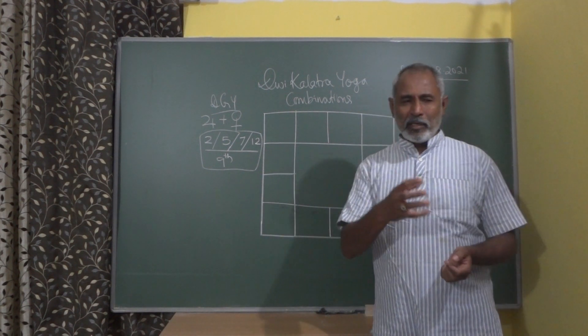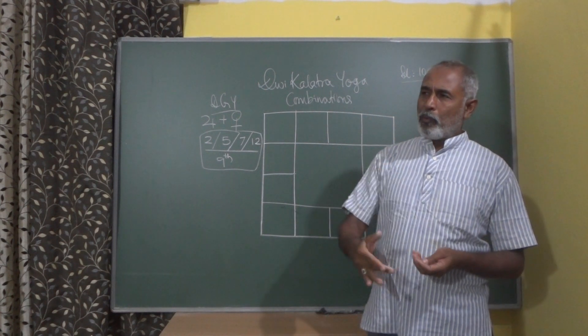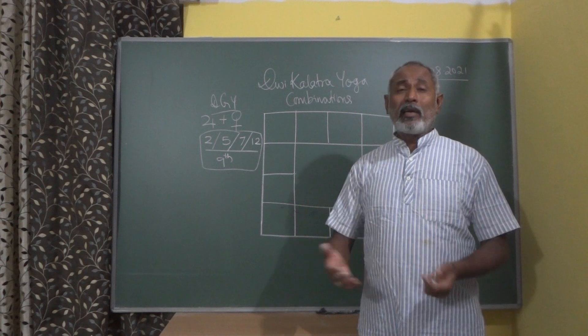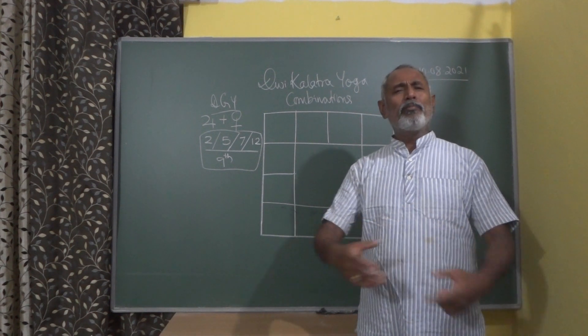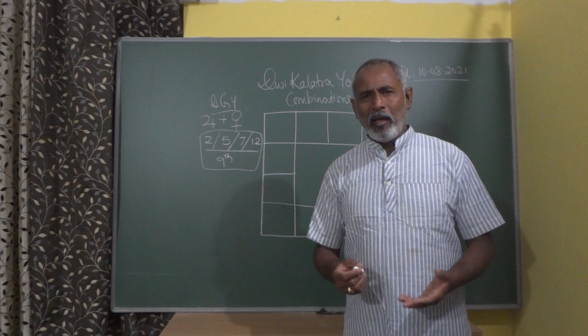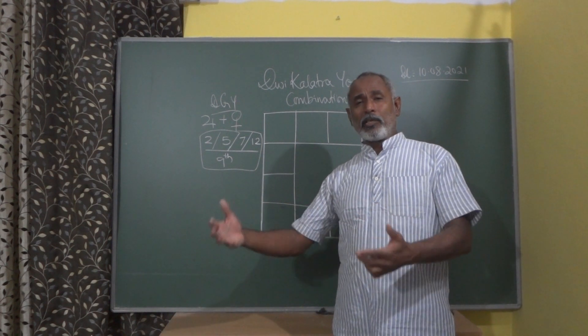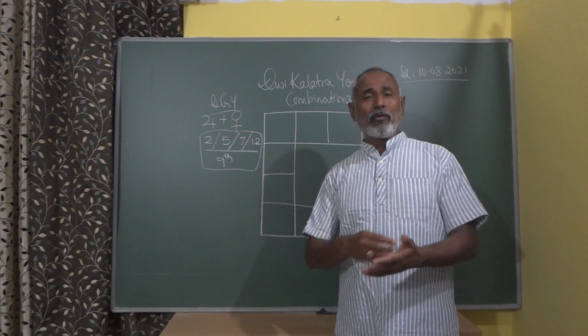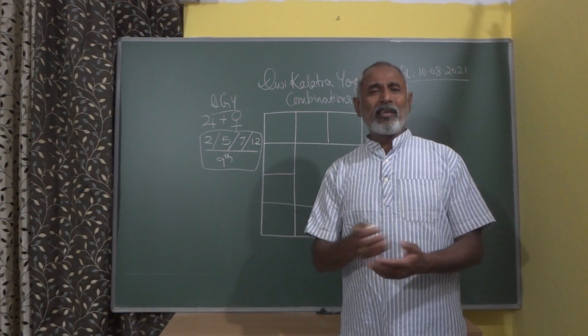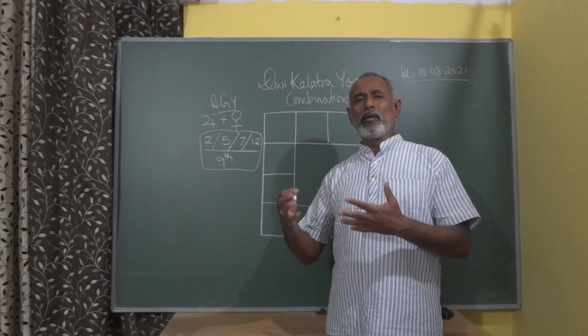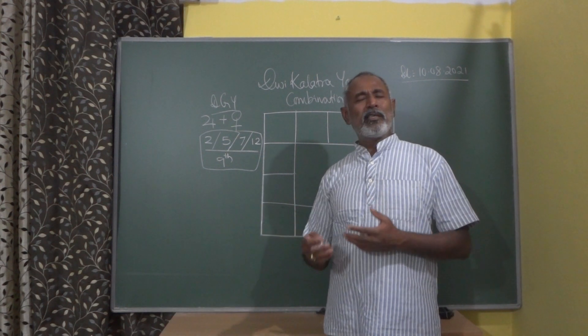there you can see that the more number of planets associated with the 7th lord, that number of spouses. It is a very simple formula telling that the number of planets associated with the 7th house, you will have to count the number of spouses. That doesn't happen in actual practice, because I have tested that particular thing in many charts, it doesn't happen.